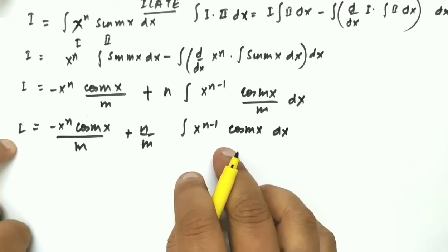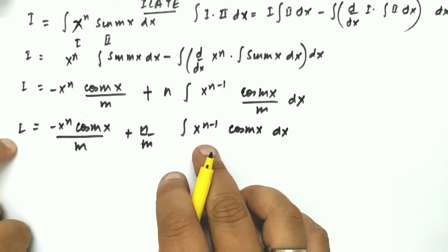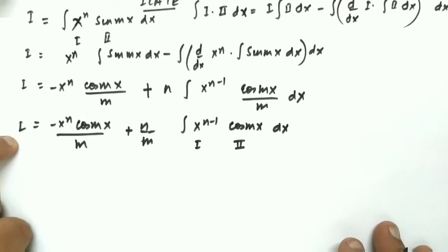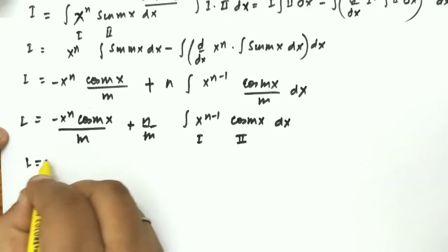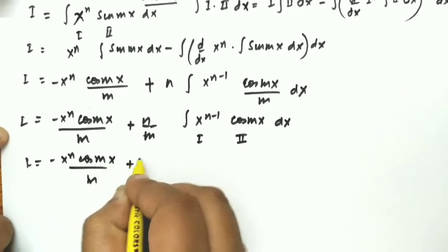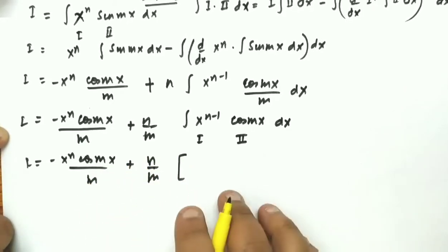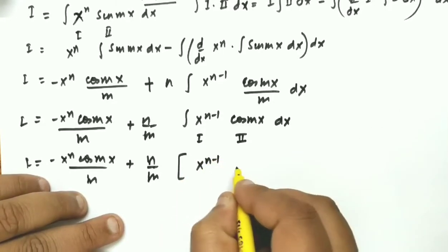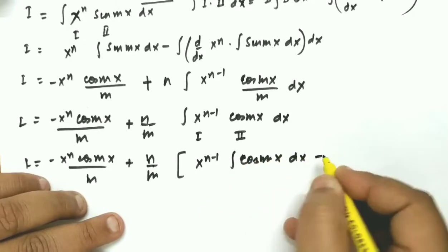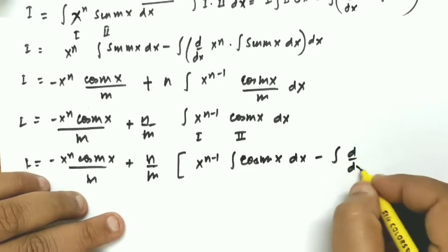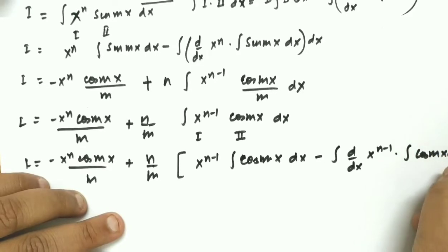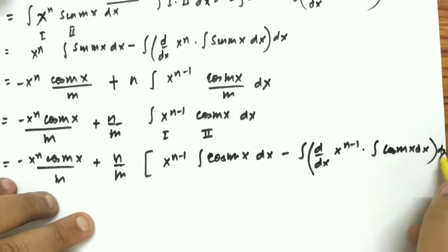Now I will apply integration by parts again. x to the power n−1 is assumed as first function and cos(mx) as the second function. So: first function times integral of second function — integral of cos(mx) dx — minus integral of differentiation of first function, d/dx of x to the power n−1, times integral of cos(mx) dx, whole dx.